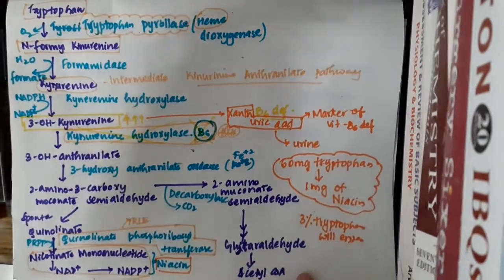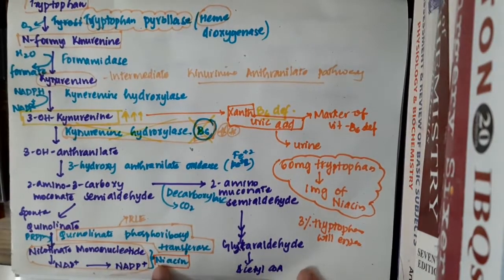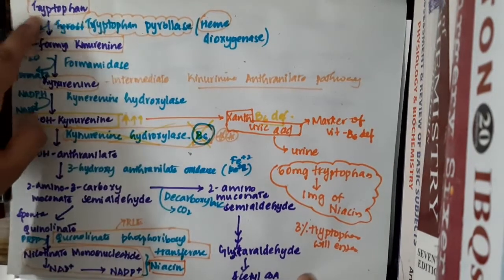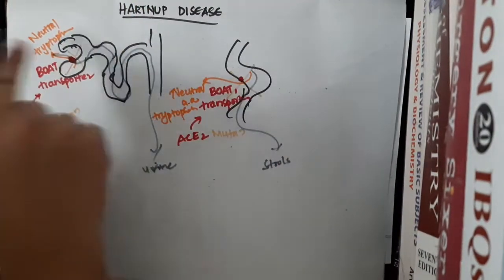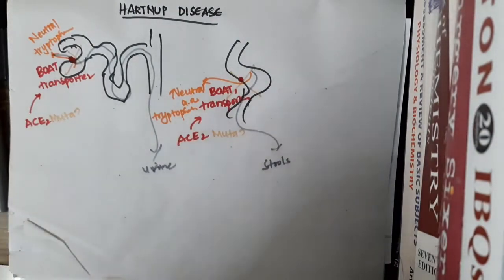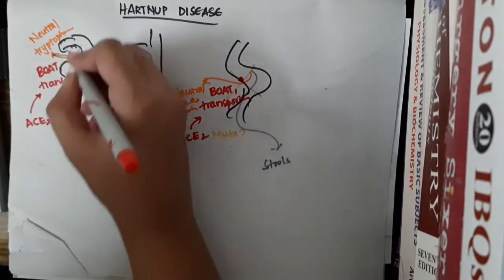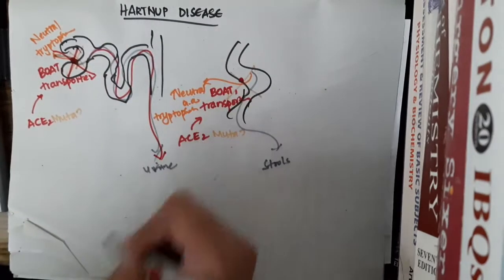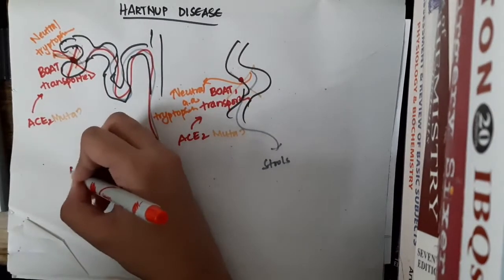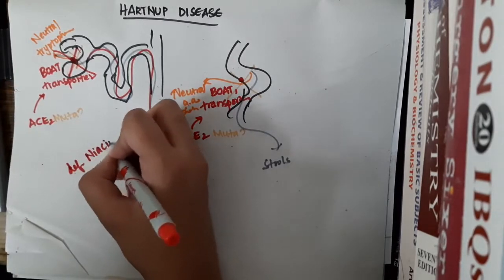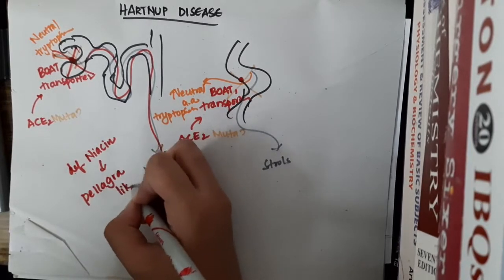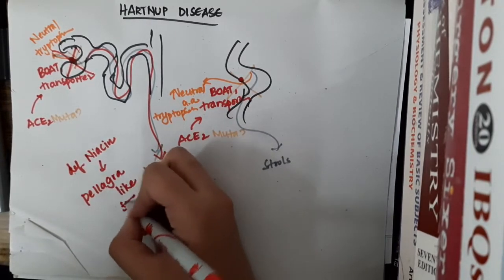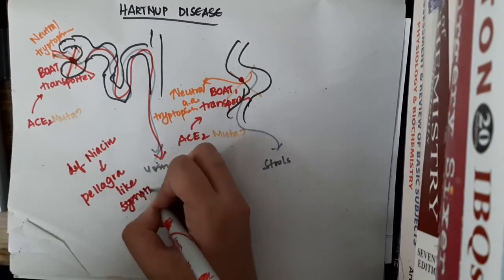If you remember, tryptophan is actually important in the production of niacin. So if tryptophan is absent because it is lost in the urine, there is a deficiency of niacin. Deficiency of niacin results in pellagra-like symptoms, which are seen in patients with Hartnup disease.